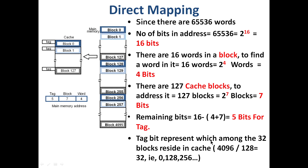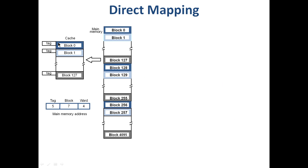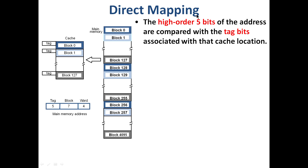The 5-bit tag represents which of the 32 groups of blocks is currently in a cache location. Since 32 main memory blocks map to each cache block, the tag identifies which one is currently present. Tag bits are used to distinguish which block among the 4096 main memory blocks is currently occupying a given cache line.